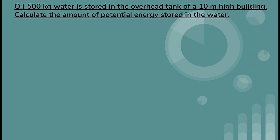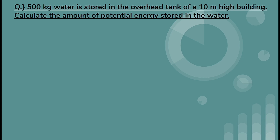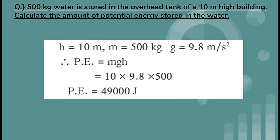Let's take a question. 500 kg of water is stored in the overhead tank of a 10-meter high building. Calculate the potential energy stored in the water. Given: h = 10 m, m = 500 kg, g = 9.8 m/s². PE = mgh = 500 × 9.8 × 10 = 49,000 joules.